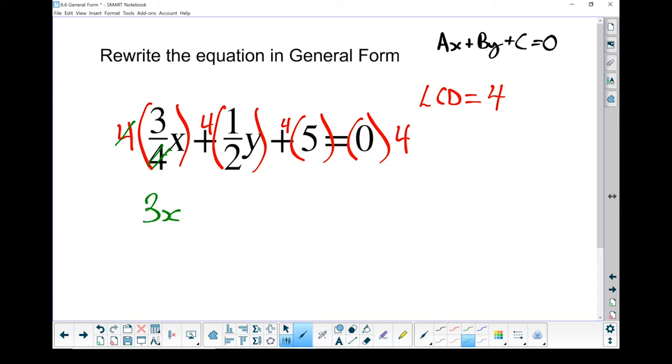So I'm left with three x. Four times one half, I'm timesing by four, dividing by two. I can simplify that. If I divide that by two, I'm left with nothing. If I divide that by two, I'm left with two. So I got two times one times y, so plus two y. Over here on our c value, four times five gives me plus twenty. And over here on the other side of equal sign, four times zero gives me zero.